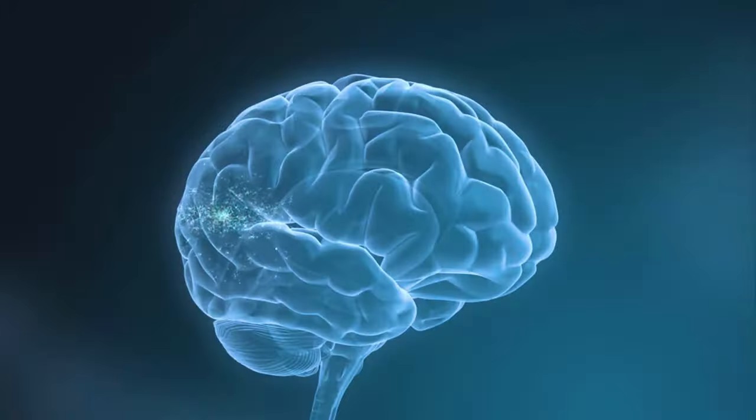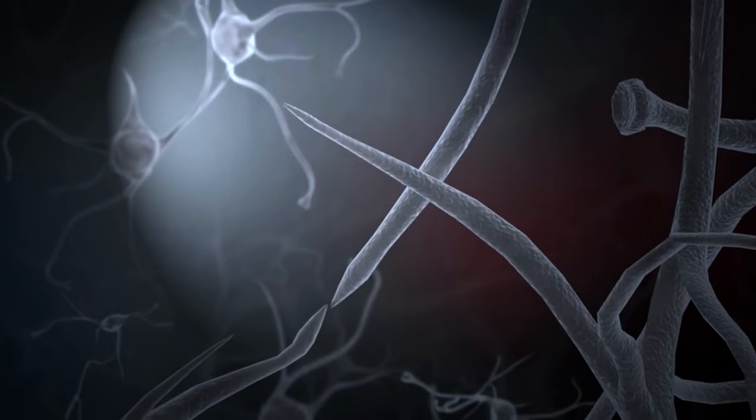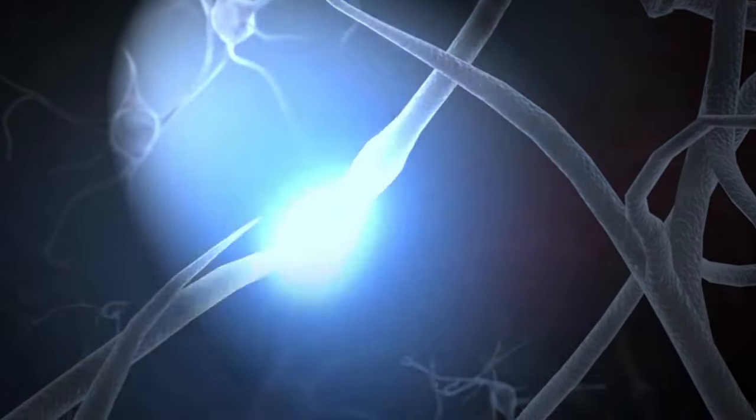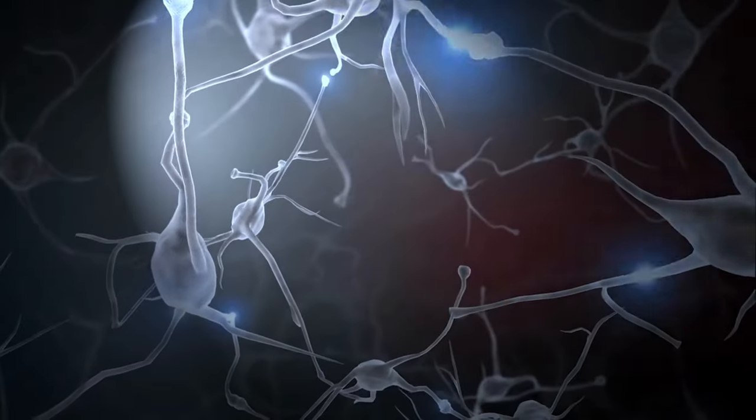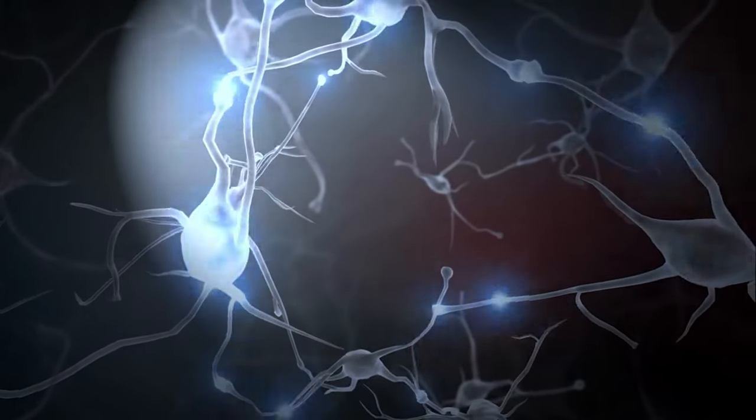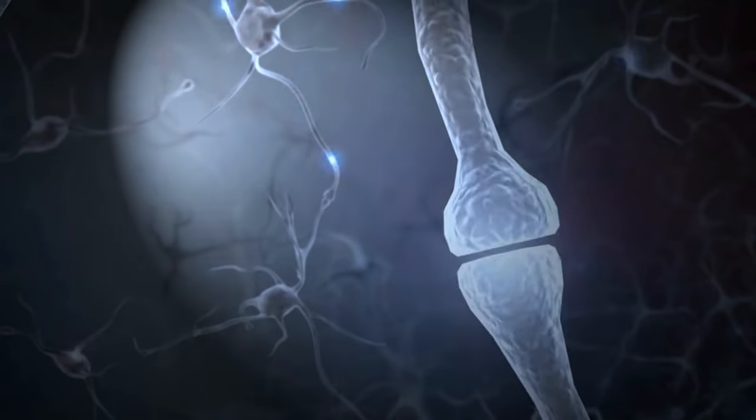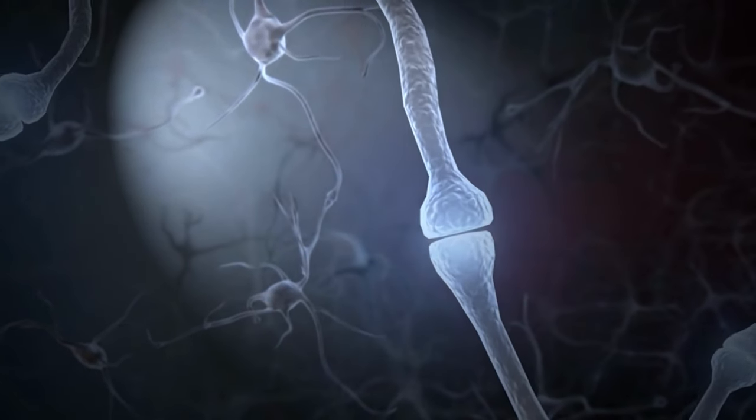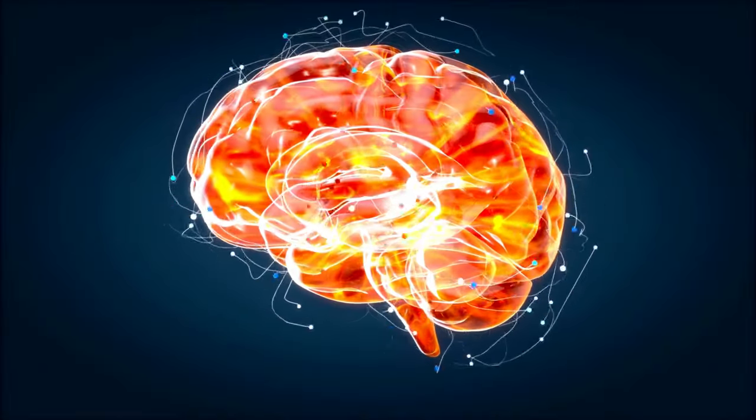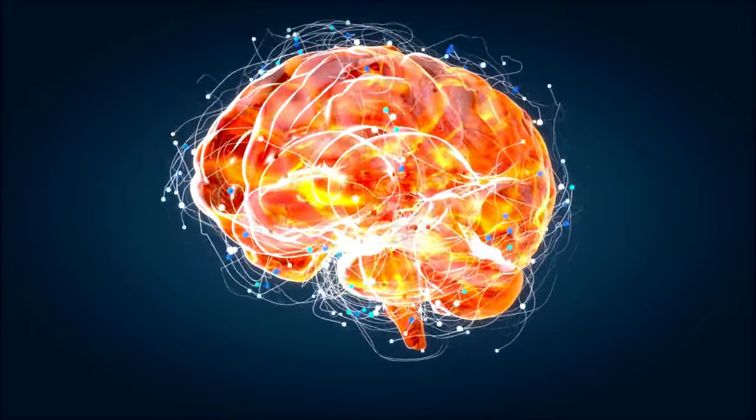Neurons are the basic units of the brain, and they communicate with each other by sending electrical signals. When these signals are sent, they create a small electrical current. This current is what powers your brain and allows it to function.